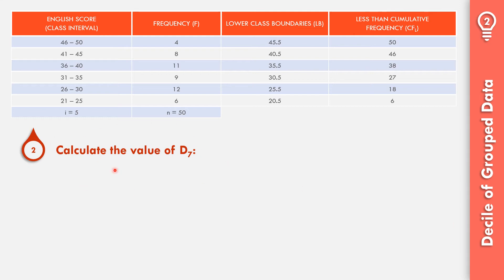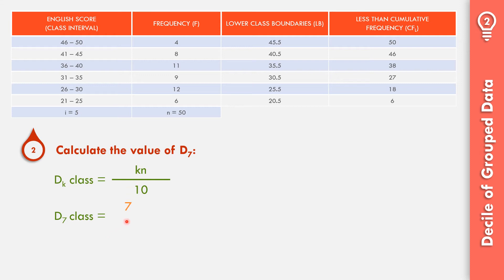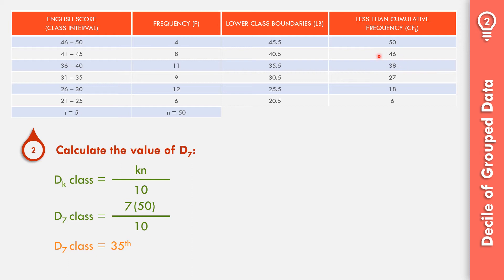For Example 2, let us calculate D7. First identify the D7 class: k×N/10 = 7×50/10 = 35. The value 35 falls between cumulative frequencies 27 and 38, so the D7 class is the interval 36 to 40.